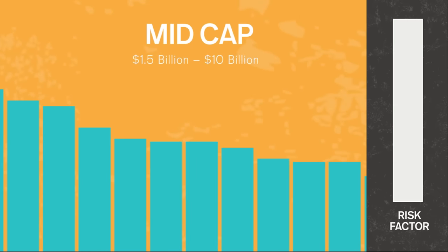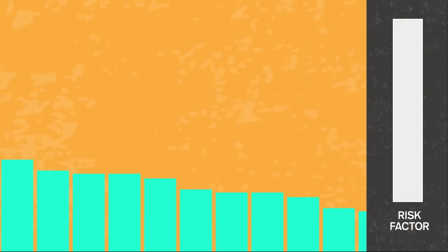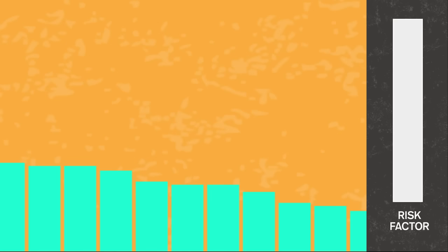Mid-cap stocks include roughly the next 400 companies by size – smaller, but still fairly well-established. They're considered riskier than large cap. Following large cap and mid-cap, take the next 2,000 companies and you've got small cap stock. While they have potential for greater growth, they also have the greatest risk.